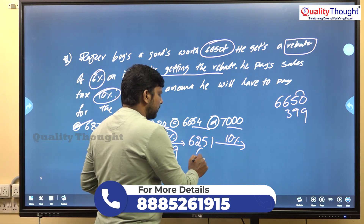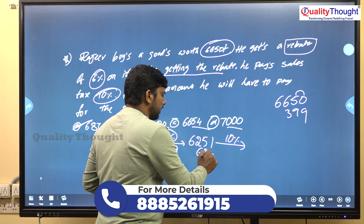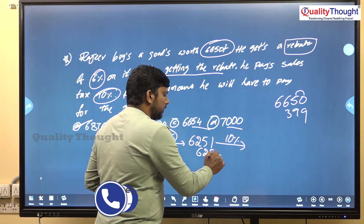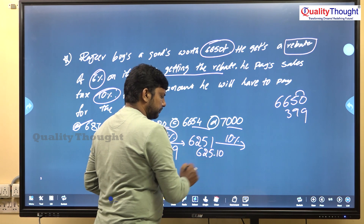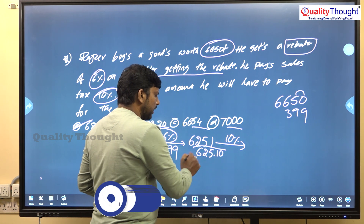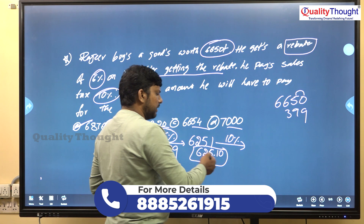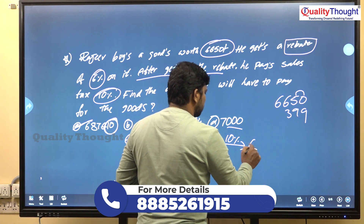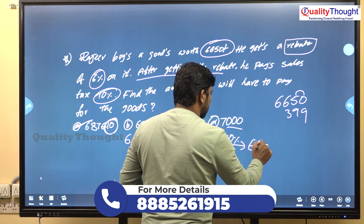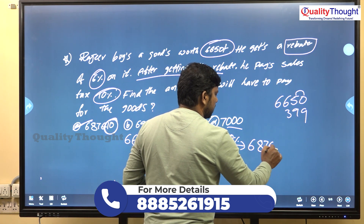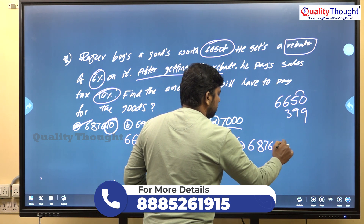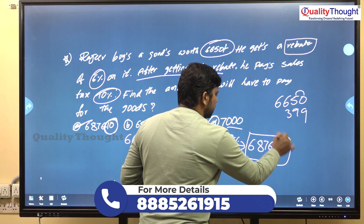10% of 6,251 is 625.10, so the total comes to 6,876.10 rupees.